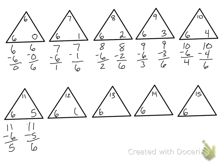6 plus 6 is 12, so 12 minus 6 equals 6. And again, just once, because we have a 6 for both numbers. 6 plus 7 equals 13, so 13 minus 6 equals 7, and 13 minus 7 equals 6.